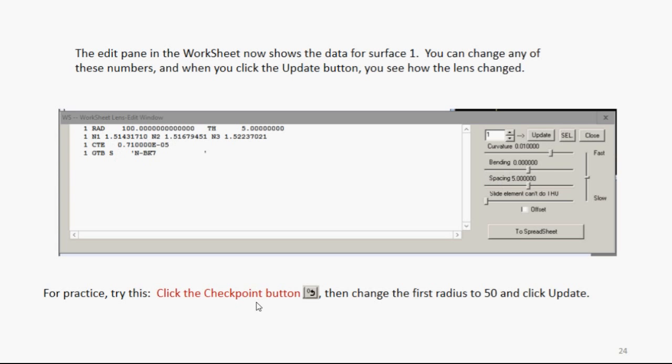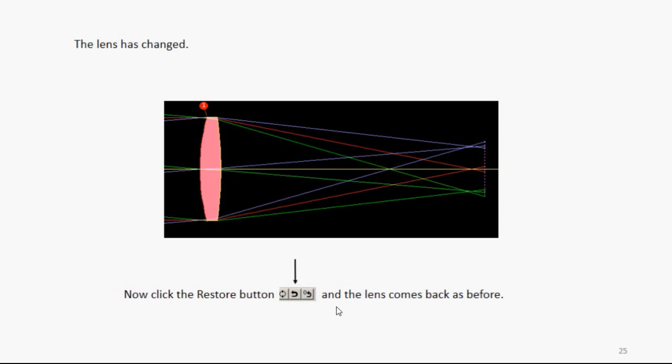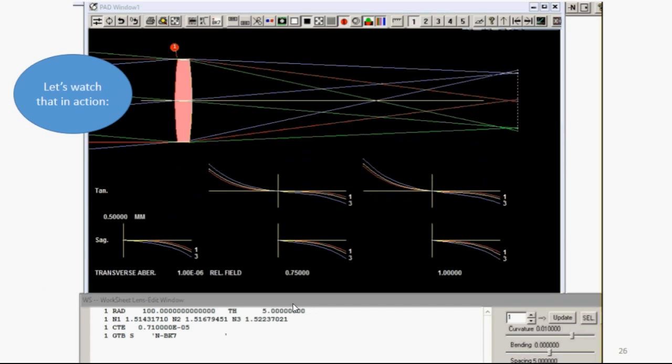Just for practice, click the Checkpoint button, and then change the first radius to 50, and click Update. The lens has changed. Now click the Restore button, and the lens comes back.